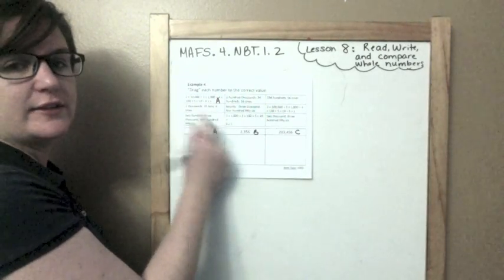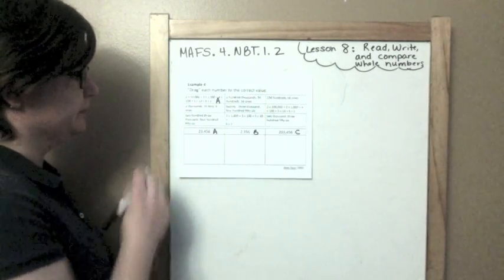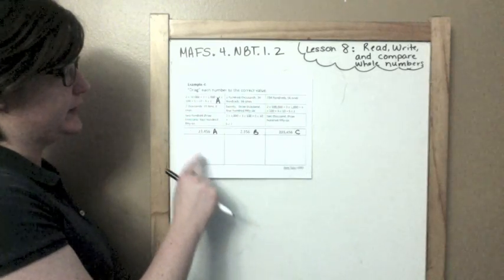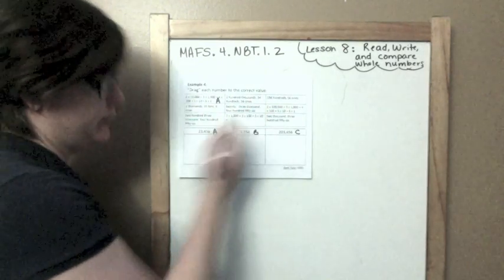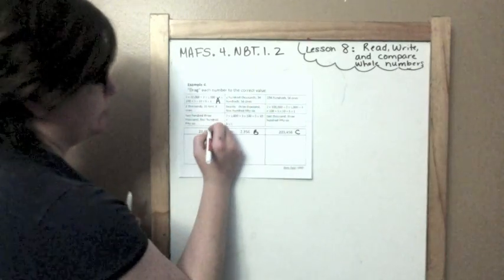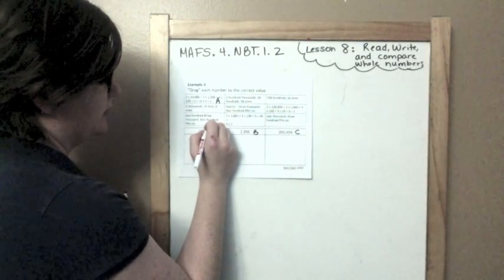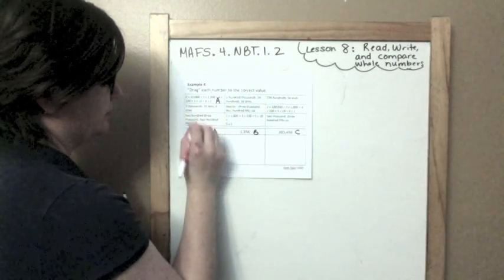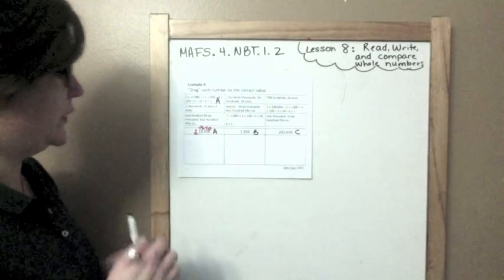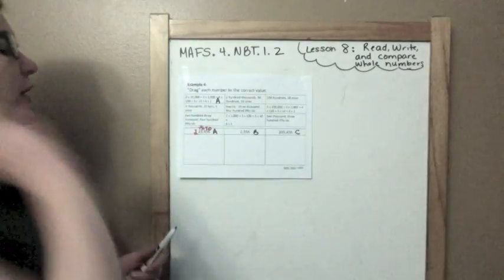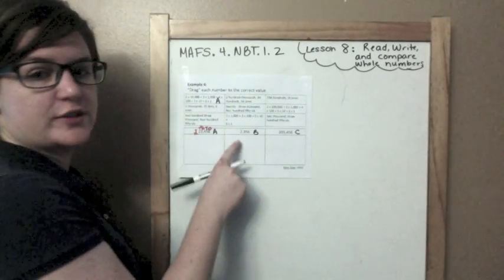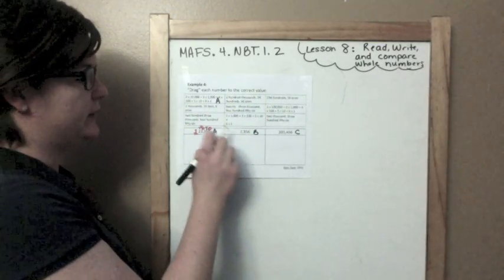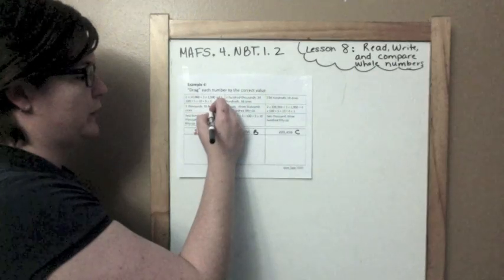I would write the same answer inside this box. So, 2 in the 1,000s place, 3 in the 10,000s place, 5 in the 10,000s — let me label the places: 1s, 10s, 100s, 1,000s, 10,000s. So 2 in the 1,000s place, 35 in the 10,000s, and 6 in the 1,000s. This one would go into column B.